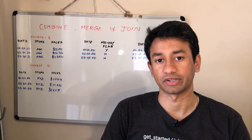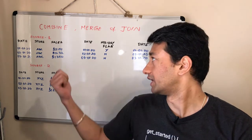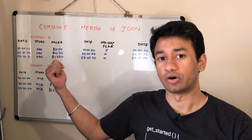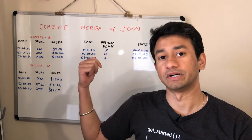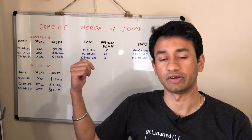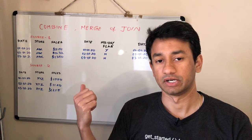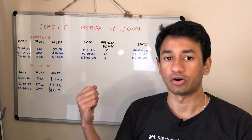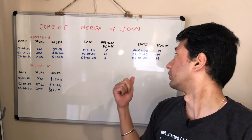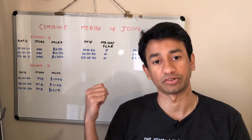As you see a sample dataset behind me, we have sales of a particular store in a city. Also, we have for each particular city and for each day, whether it's a holiday or a non-holiday flag. Also, we have details about the rainfall for that particular city date-wise.